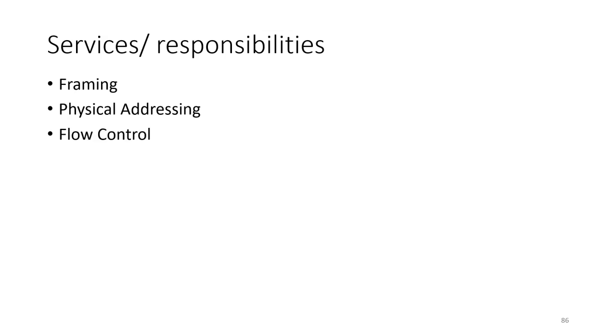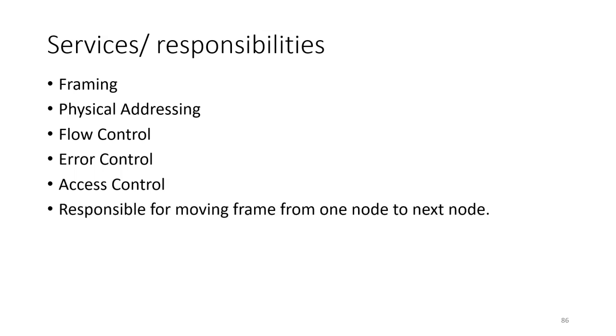Now let's see the services or responsibilities provided by the data link layer. The first one is framing, the second is physical addressing, the third is flow control, the fourth is error control, the fifth is access control, and the last and most important is moving frames from one node to the next node. Let's see all of these one by one.